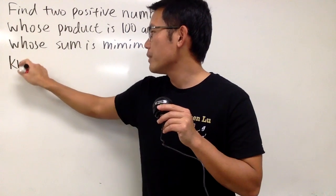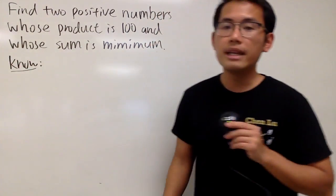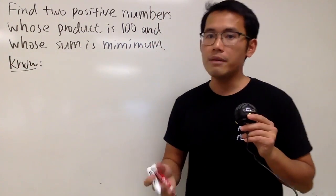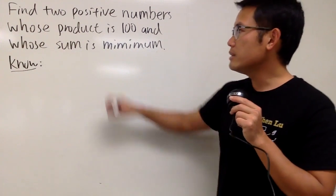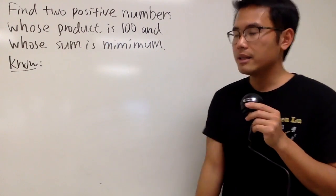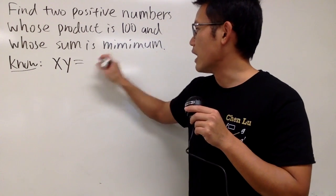First of all, let's go ahead and put down what we know. We are looking for two numbers, and let's just say we have x and y. We're using variables. And product means multiply.